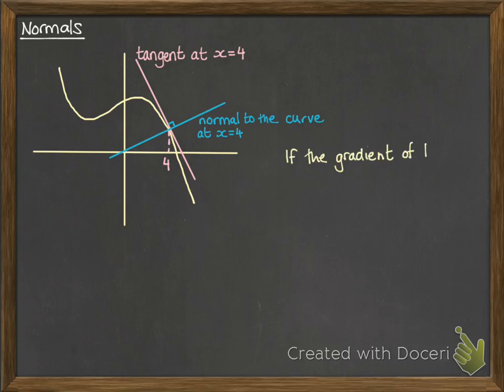Now the fact that they're at 90 degrees means that we get this result. So if we call the gradient of the tangent m, then the gradient of the normal would be minus 1 over m, or the negative reciprocal.